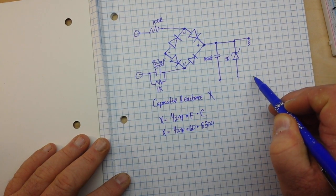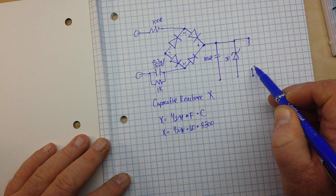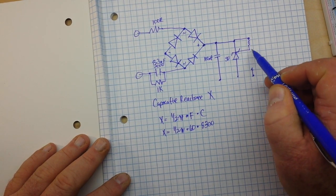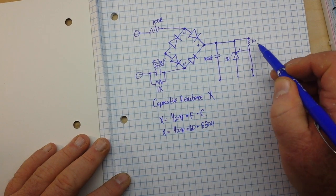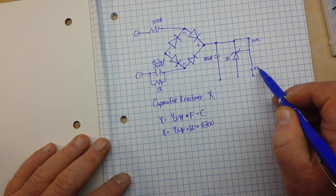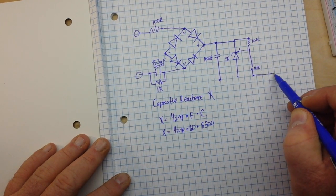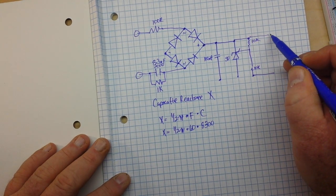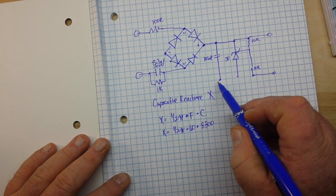And then a couple current shunt resistors. We use 10k's. And boom.